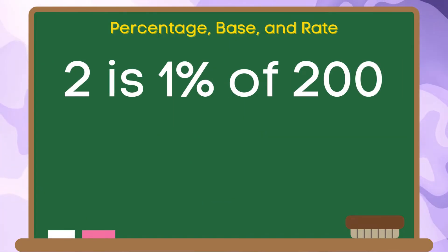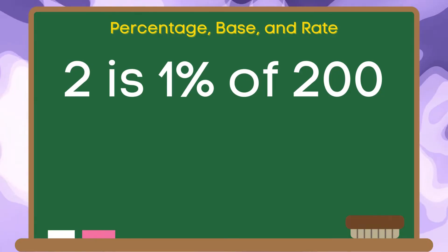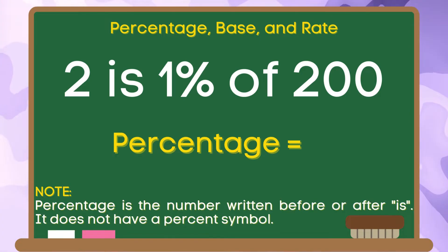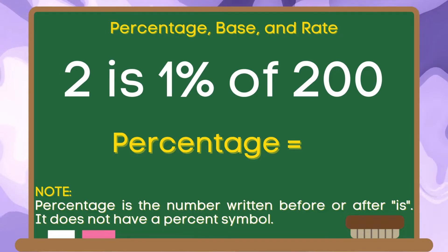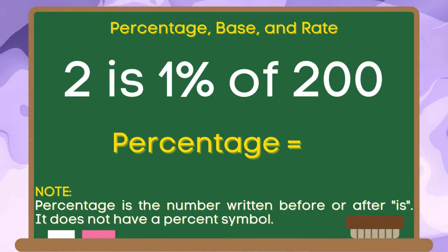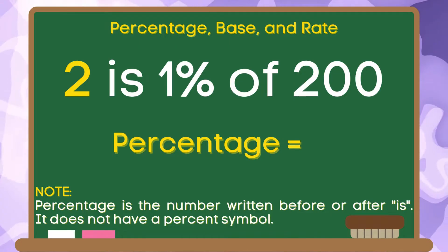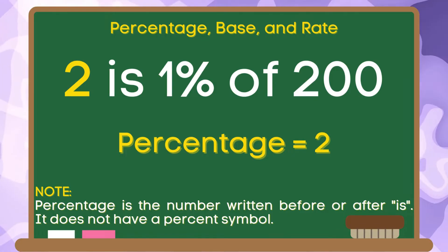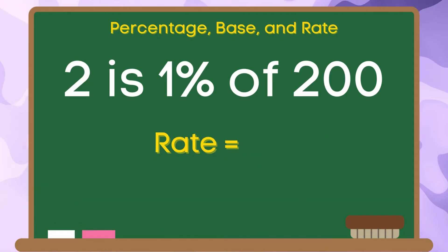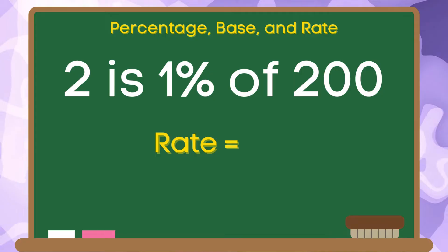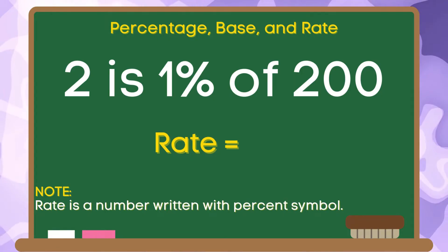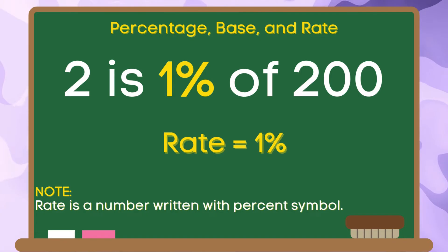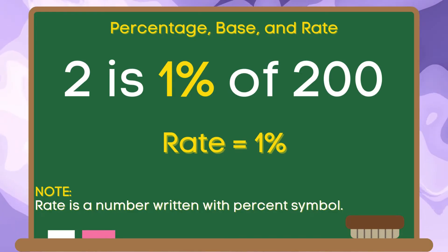For the last example, we have: 2 is 1% of 200. Let us identify the percentage. Remember, percentage is the number written before or after the word 'is' and does not have a percent symbol. In this example, 2 is written before the word 'is,' so the percentage is 2. Let us identify the rate. Rate is a number written with a percent symbol. In this example, 1 is written with a percent symbol, so the rate is 1%.